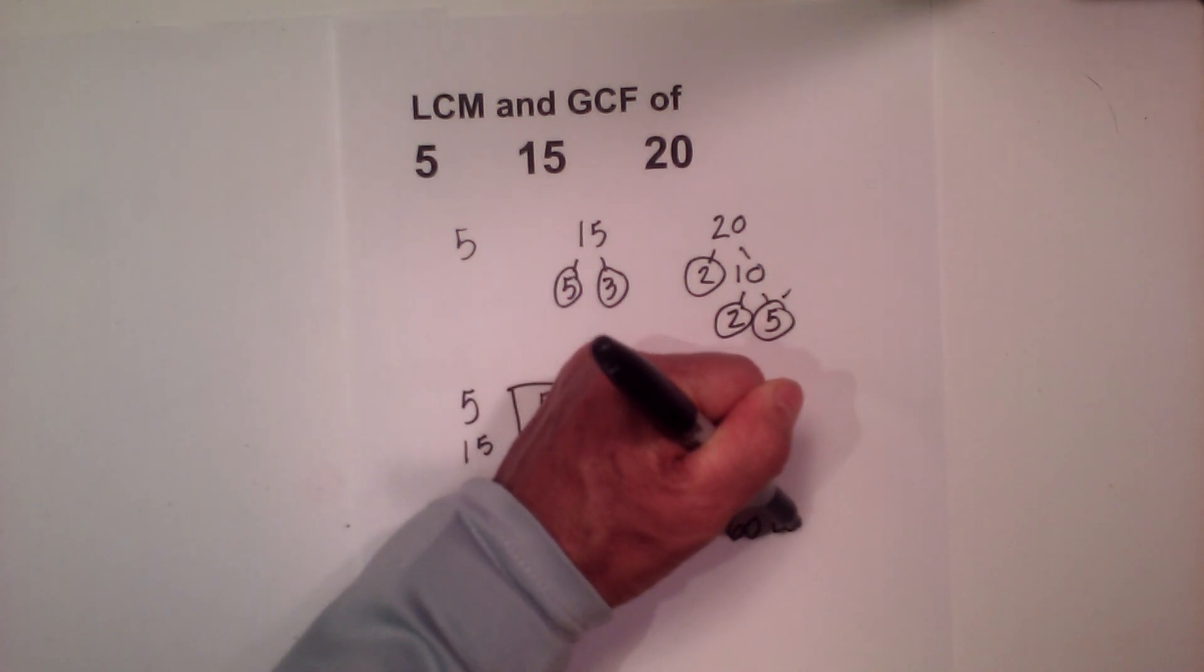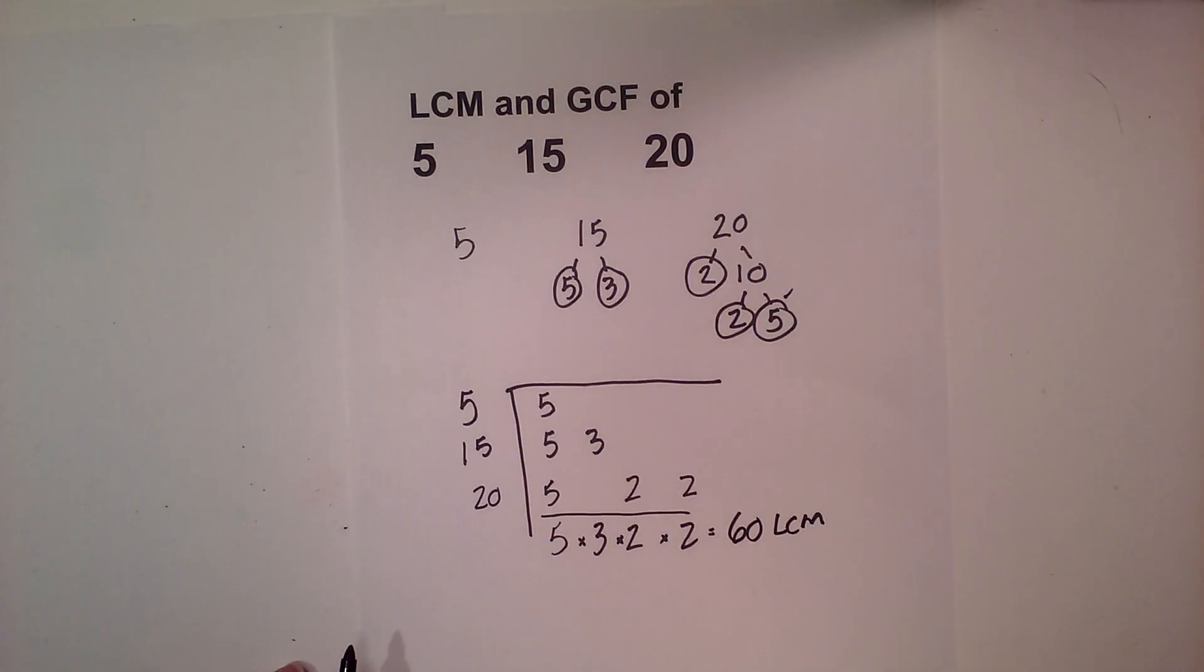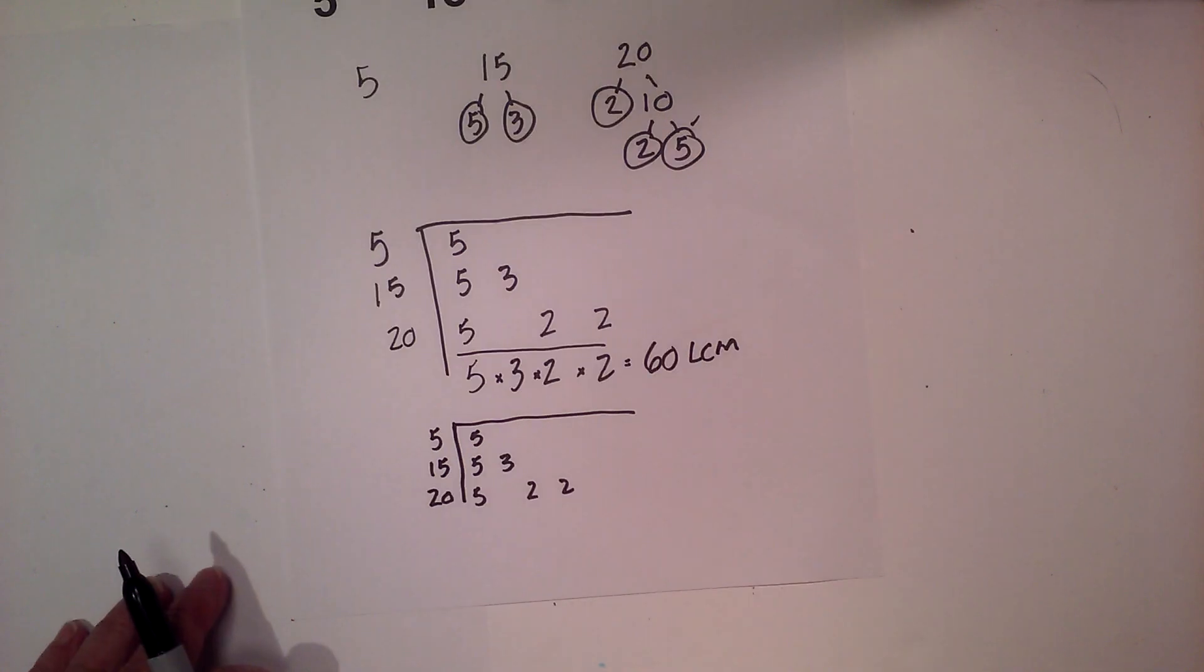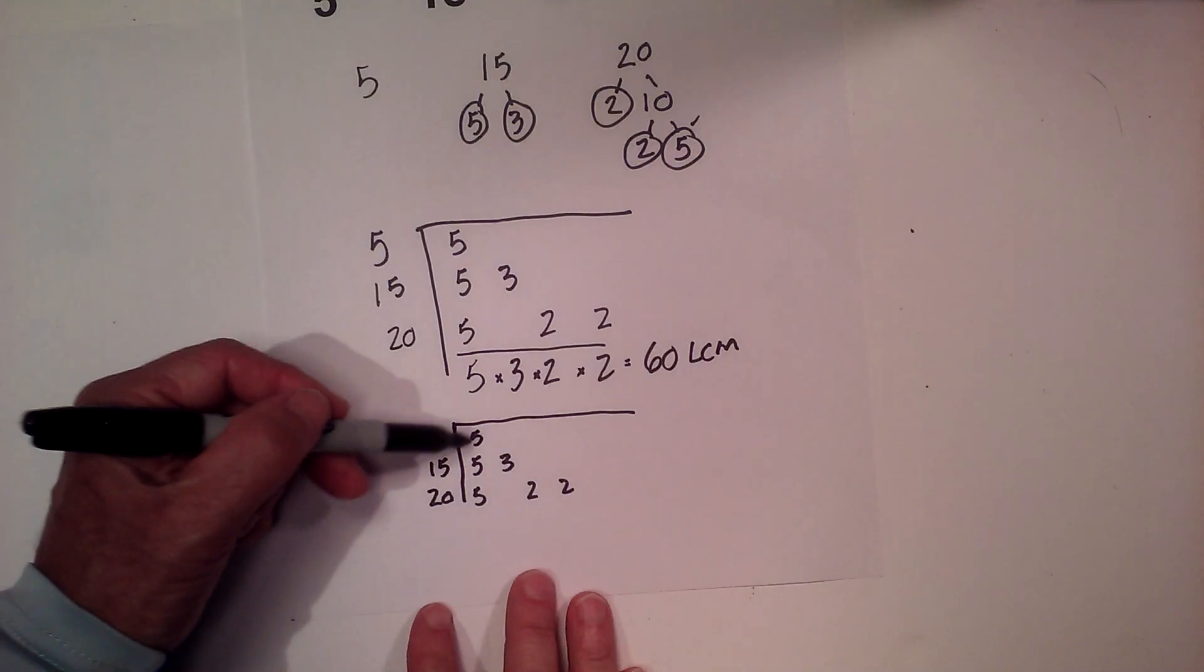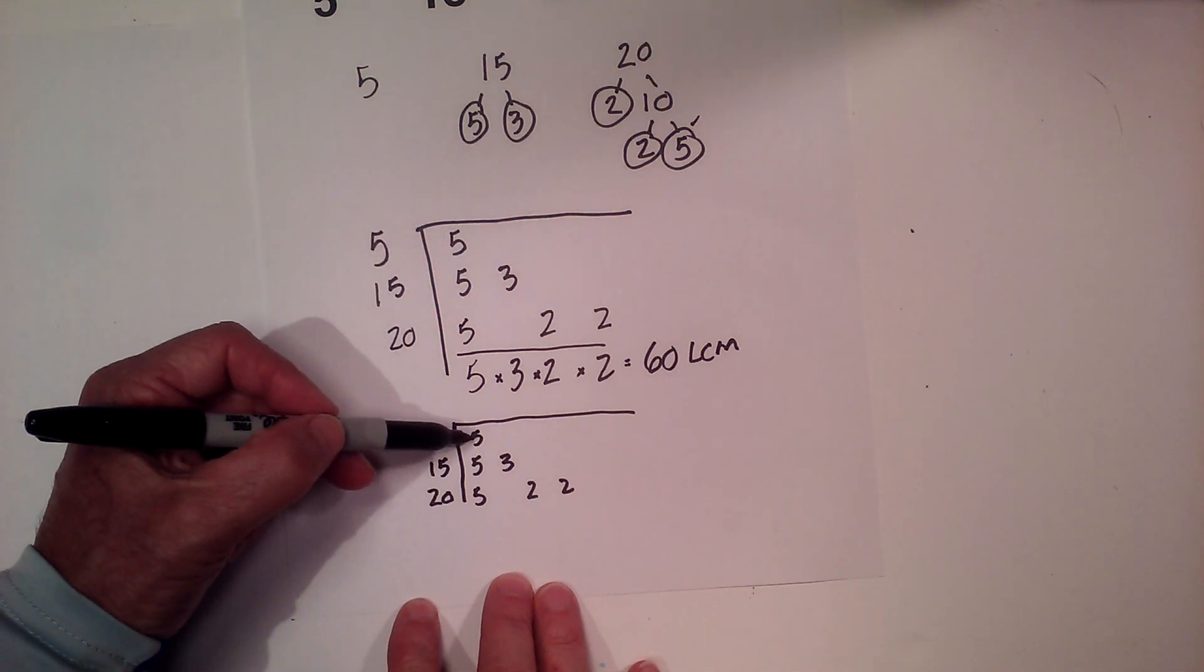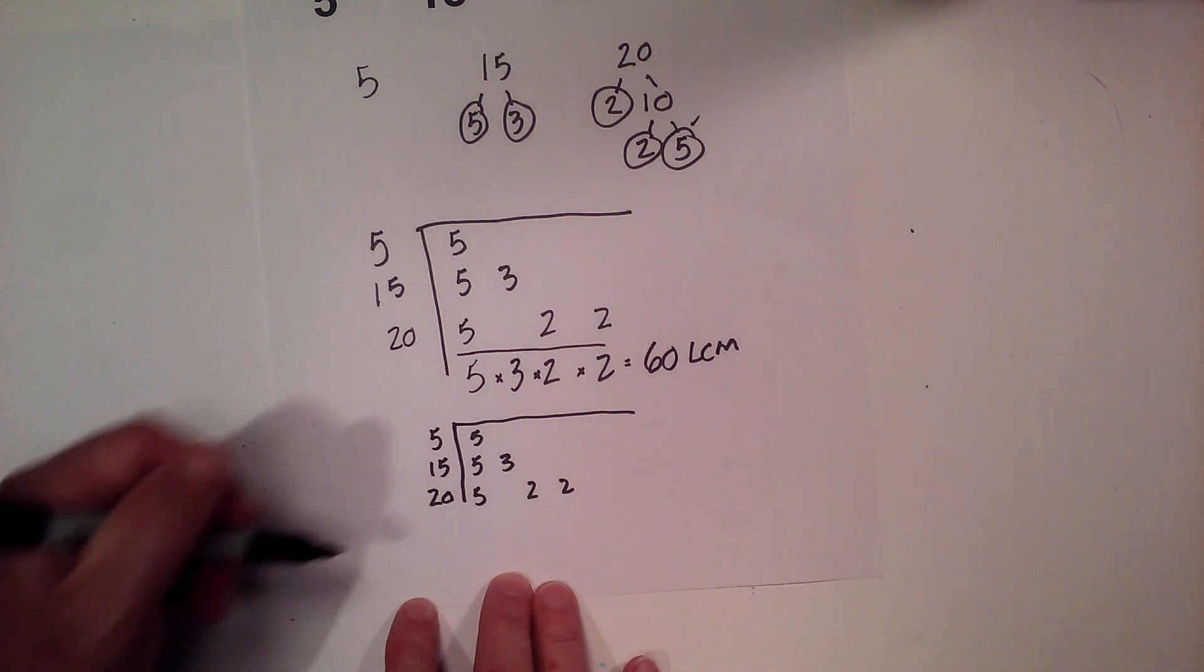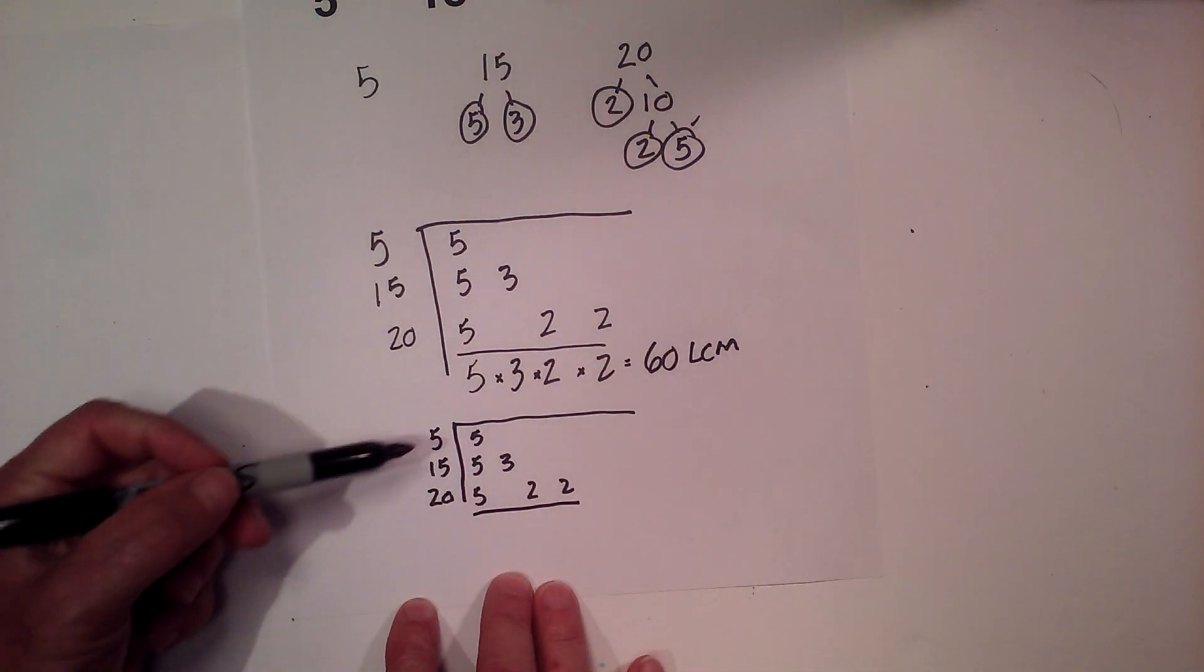Now let's work on finding the GCF. For the GCF I have rewritten the chart that I got from the factor trees. And I have a 5. Anyway the factors for 5, 15, and 20. Now for the GCF you have this rule.